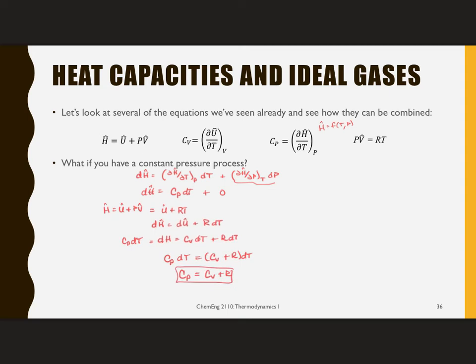So the important results that I found is that C sub P DT is going to be DH. C sub V DT is equal to DU. If I wanted to know DH extensive, I would multiply by mass. And then I've also learned that I can relate C sub P and C sub V using this equation.